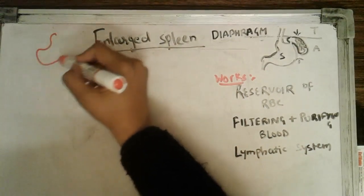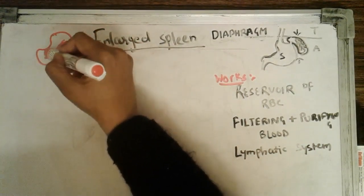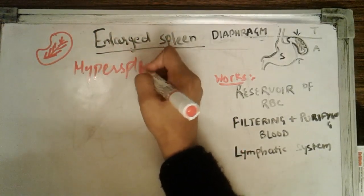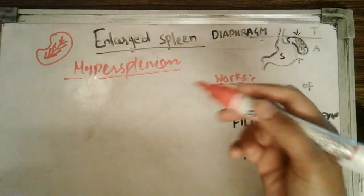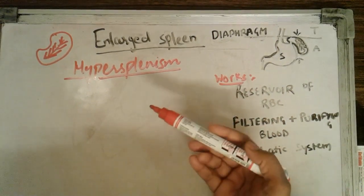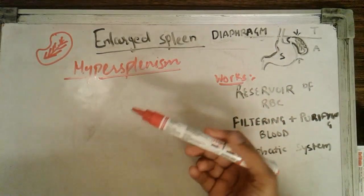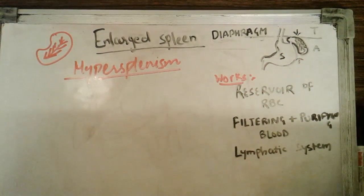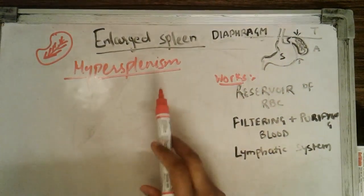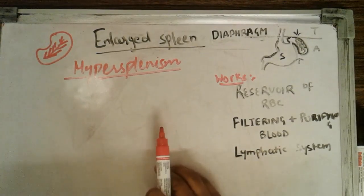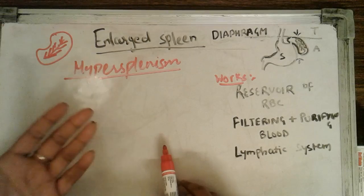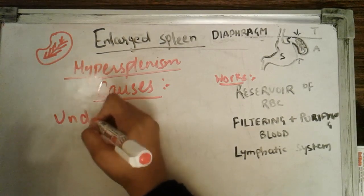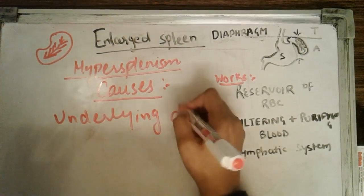Sometimes our spleen starts acting with hyperactivity in our body, and that is called hypersplenism. It starts producing over-functions inside the body because it is enlarged in size, and it starts performing multiple functions that are usually not needed. Enlarged spleen is a disease in itself, caused by multiple factors and mainly by underlying diseases.